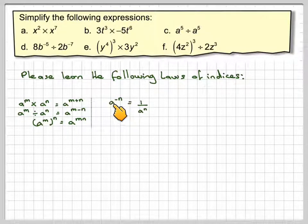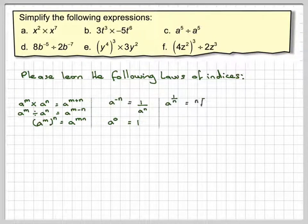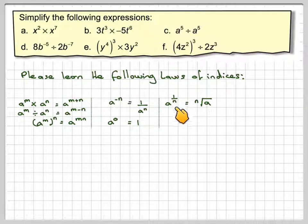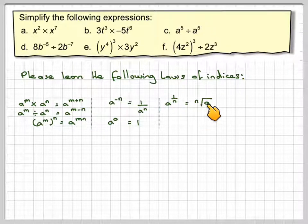Then you have the idea that a negative index, a to the minus n, is 1 over a to the n. Anything to the power of 0 is equal to 1. And then a to the 1 over n is the nth root of a. So if it was a to the half, it would be the square root of a. If it's a to the 1 third, it would be the cube root of a.